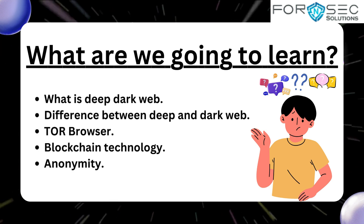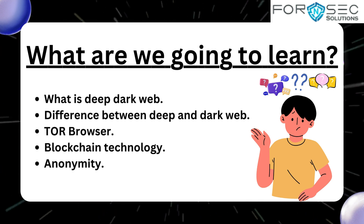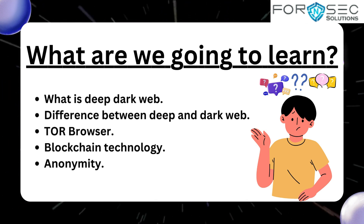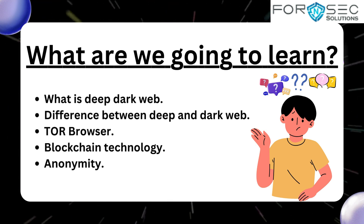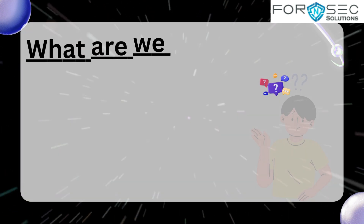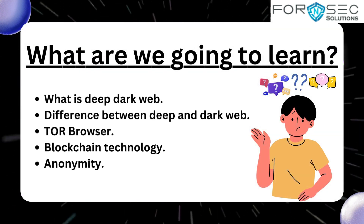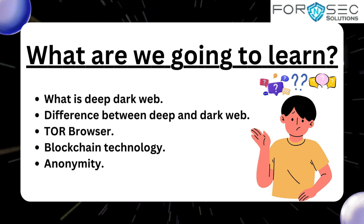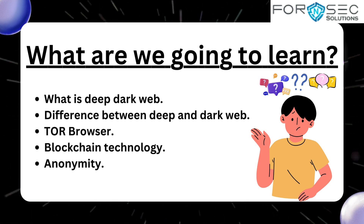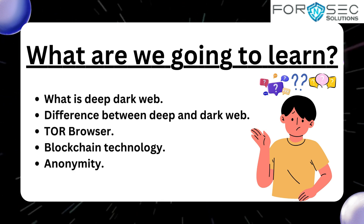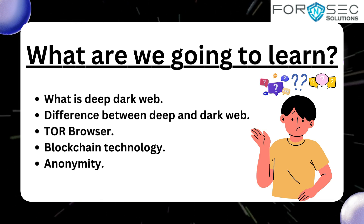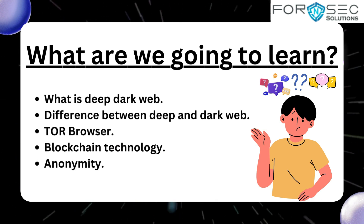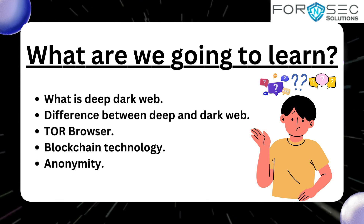Next topic: Tor Browser. In day-to-day life we mainly use browsers like Google Chrome, Mozilla Firefox, or in the case of Mac users, Safari. But these browsers are made to access the surface web. To access the dark web we need a special browser known as Tor Browser. The main advantage of Tor Browser is the anonymity factor, which keeps your identity and data such as your location secure. We will learn about this in detail in upcoming lectures.